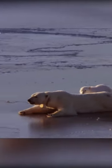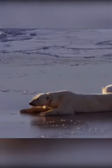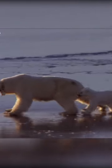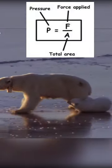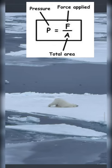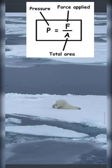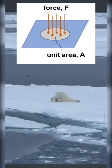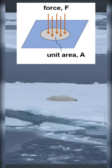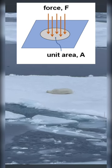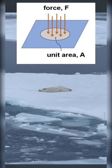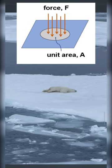Instead of walking on all four legs, the polar bear lies down and slides its way on the ice surface, because they know the pressure concept very well — that is, pressure equals force upon area. The pressure will decrease if the area on which it is applied is increased. While standing, the weight of the bear is concentrated in a small area, but while lying down flat, weight is distributed on an area equal to the bear's body surface area.